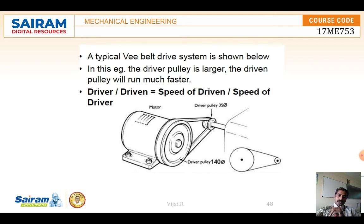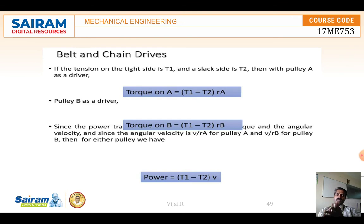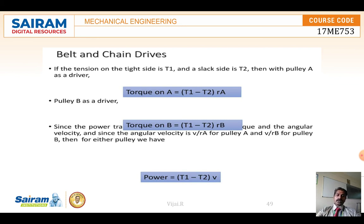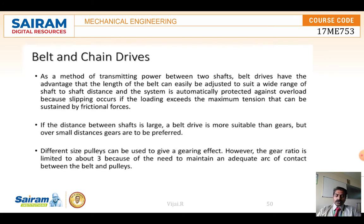The tension side is T1 and the slack side is T2. If pulley A is the driver, the torque on A equals (T1 minus T2) multiplied by the radius of A. If B is the driver, torque equals (T1 minus T2) multiplied by the radius of B. The power required depends on the tension difference between the two pulleys.